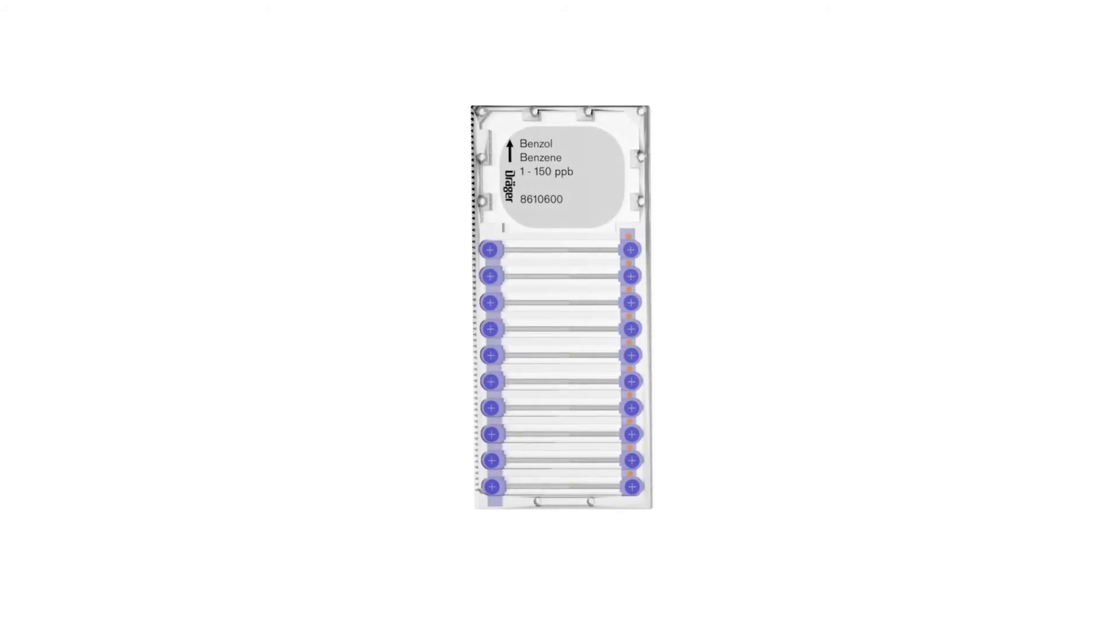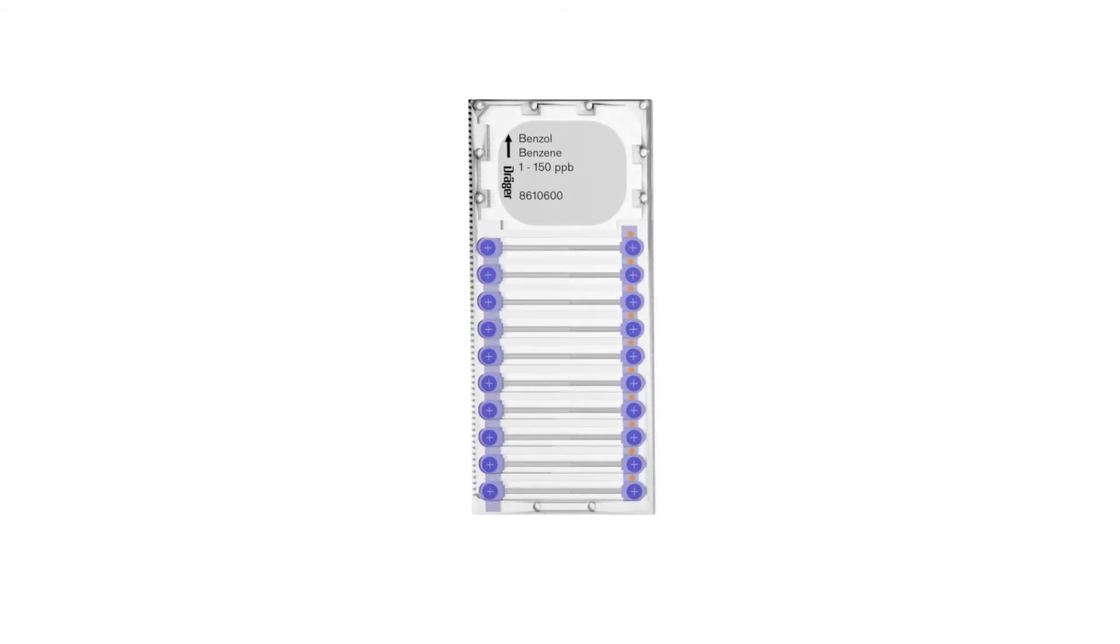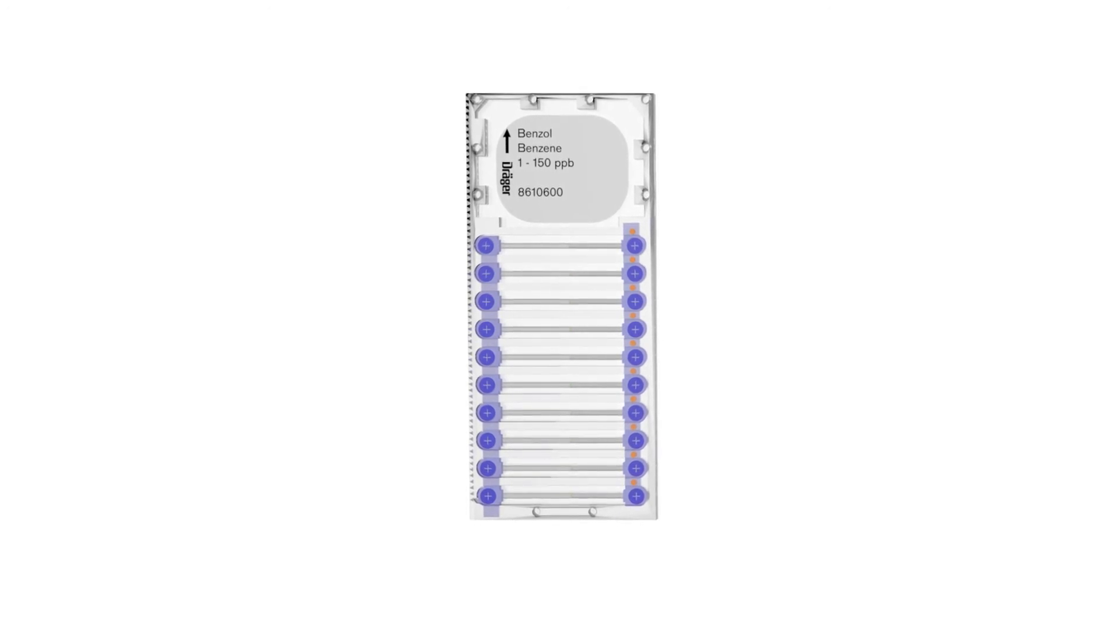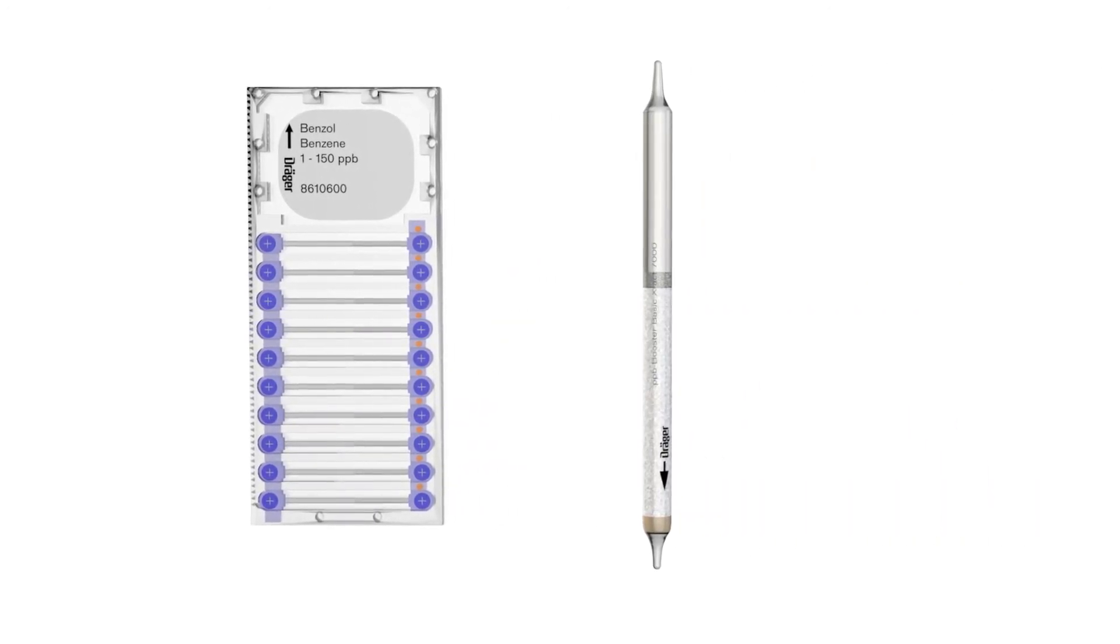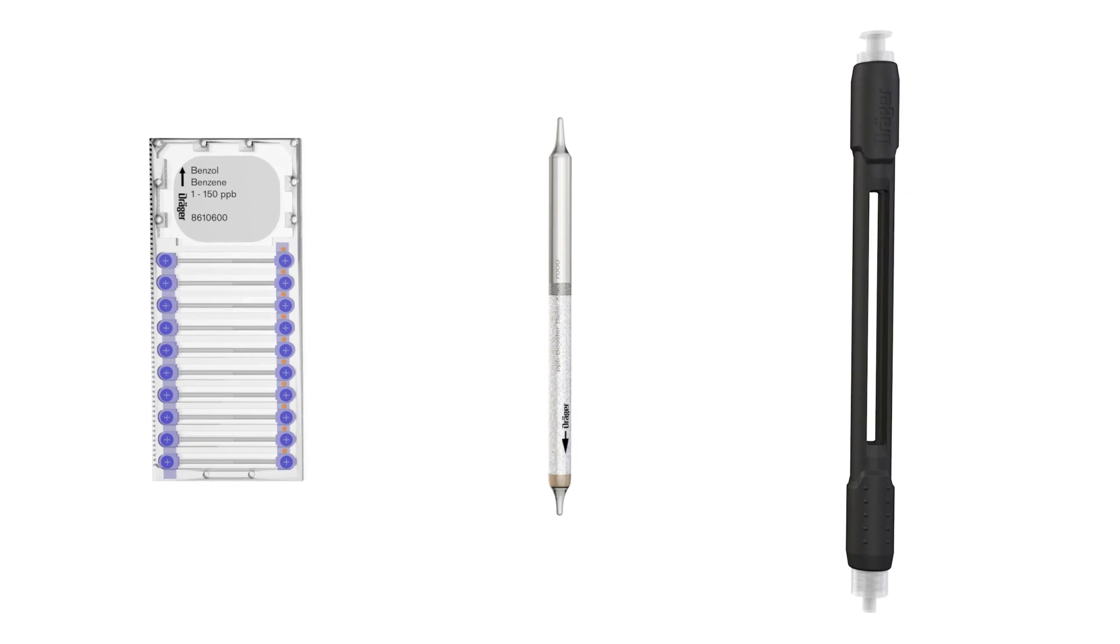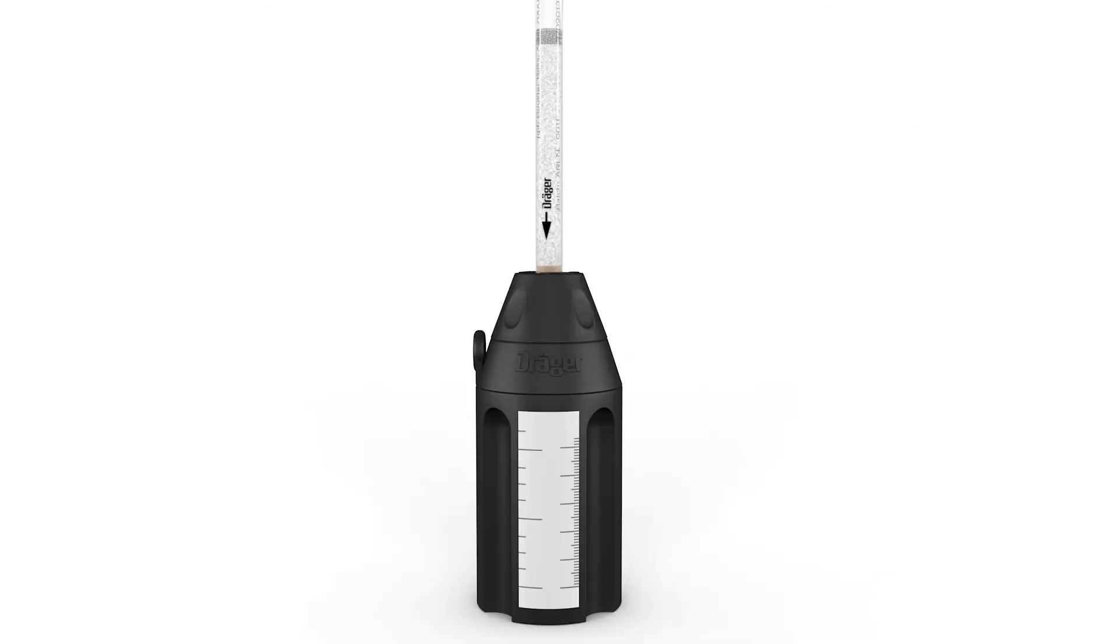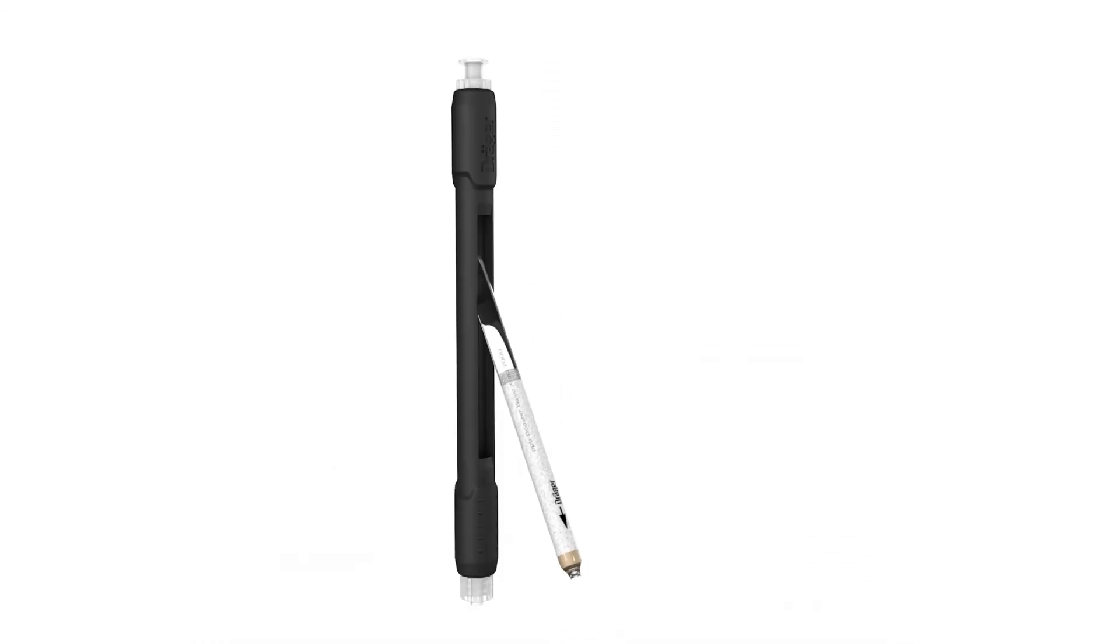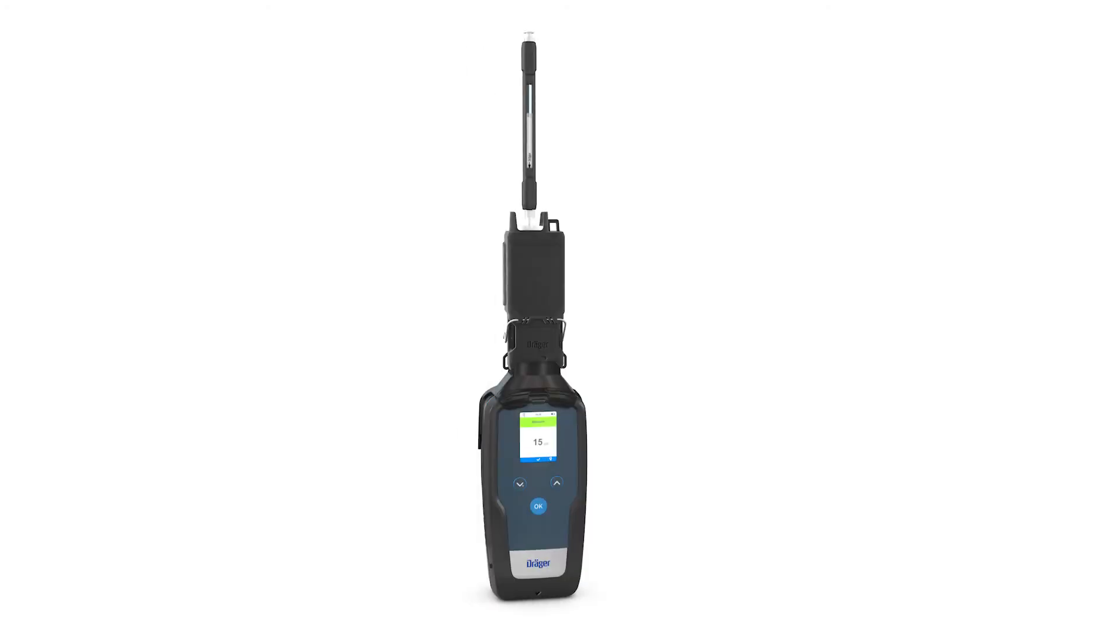To boost sensitivity and selectivity even further for some Drager microtubes, a pre-tube is required in combination with a pre-tube holder. To use the pre-tube, simply open the tip of the tube and place it into the pre-tube holder. After that, you can perform the test in the usual way.